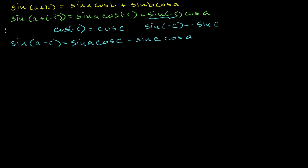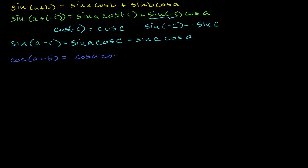I'm going to use all of these to prove a bunch more trig identities that I'm going to need. The other trig identity is that the cosine of a plus b is equal to the cosine of a times the cosine of b — you don't mix up the cosines and the sines in this situation — minus the sine of a times the sine of b.